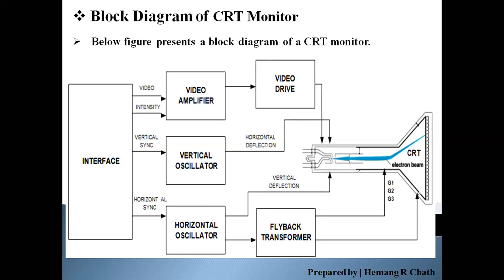The control grid controls the flow of electrons. The electronic beam is transmitted continuously through the electronic gun, and the flow of electrons through the light signal emitted from the electronic gun is controlled by the grid control system.